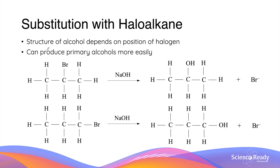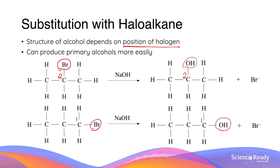The substitution results in the formation of an alcohol and the departure of the halogen ion, or the halide ion. The structure of the alcohol product depends on the position of the halogen — if the halogen is on the second carbon, the alcohol formed will also be on the second carbon; if it is on the first carbon, the alcohol will also be on the first carbon. Substitution with a haloalkane can produce primary alcohols more easily compared to hydration of alkenes, because primary alcohols are typically the minor product in an addition reaction such as hydration.